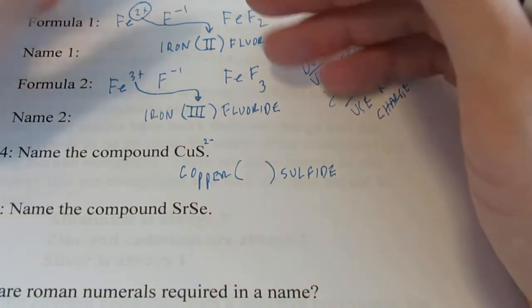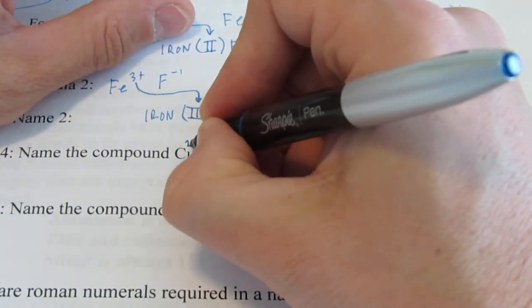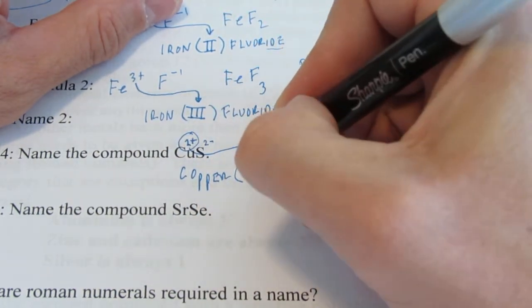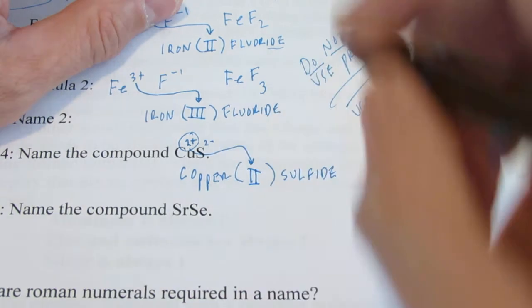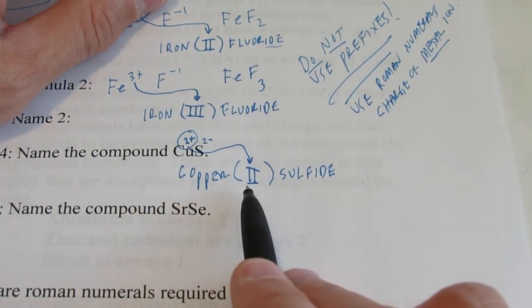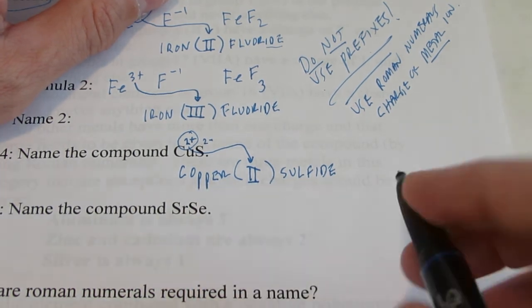The sum of the charge has to be 0. So doesn't that mean that copper has to be 2 positive? So the Roman numeral I would put in here would be 2. So that compound right there, CuS, is called copper, Roman numeral 2, sulfide. Copper (II) sulfide is how we'd say it.